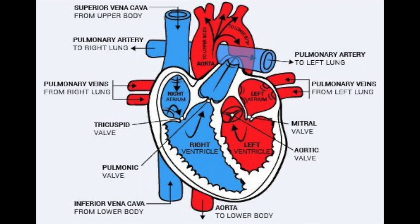From the right atrium, blood flows into the right ventricle through the now-open tricuspid valve when the atrium contracts. After the right ventricle is full and the tricuspid valve is shut, the ventricle contracts and blood leaves the heart through the pulmonic valve and into the pulmonary artery. Then it goes into the lungs where it can be oxygenated. Keep in mind that the blood in the pulmonary artery contains CO2 and is deoxygenated still.